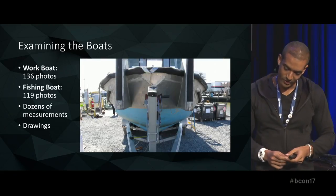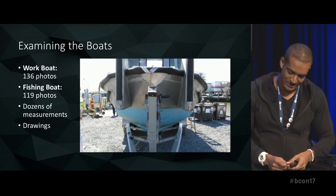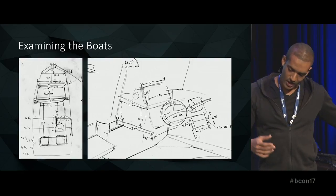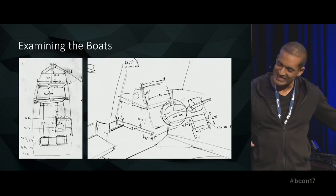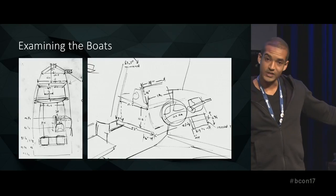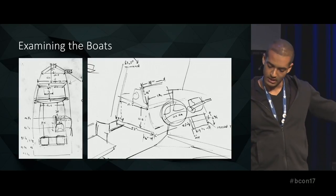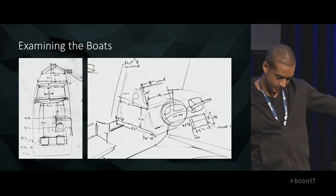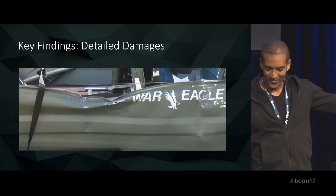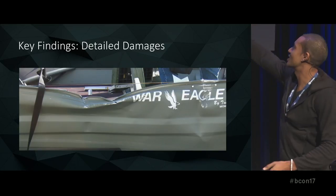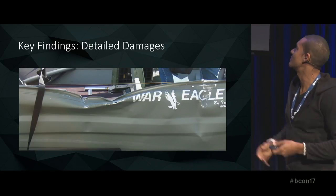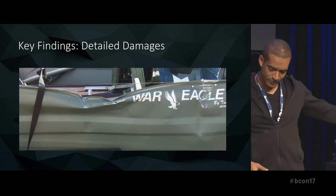First thing was to examine the boats. I took 136 photos of one and 119 of the other, plus dozens of measurements and drawings. I built a detailed cockpit. Some of the key findings were detailed damages — being able to measure where the damages happened and how much deflection was in the sheet metal was really useful.